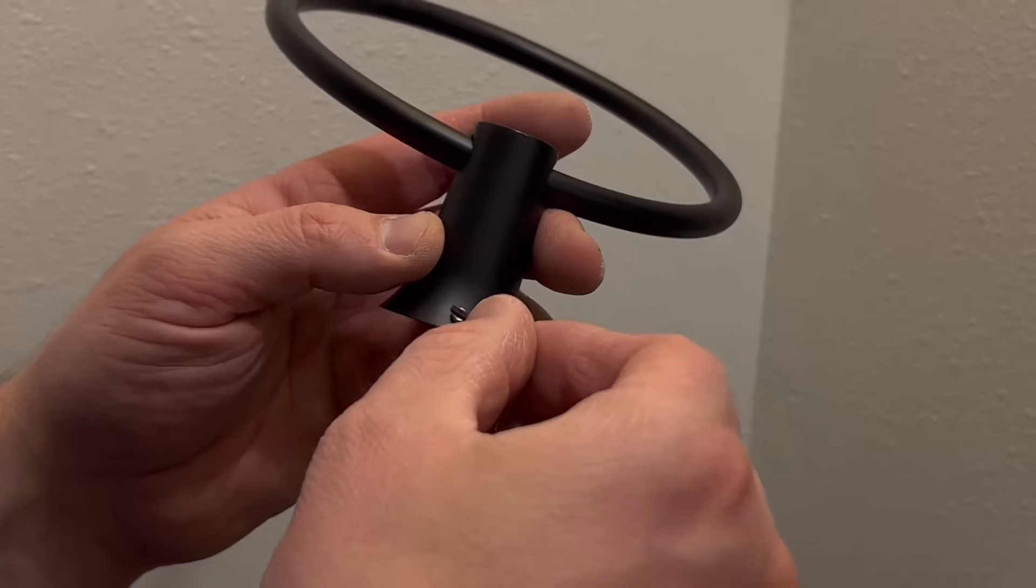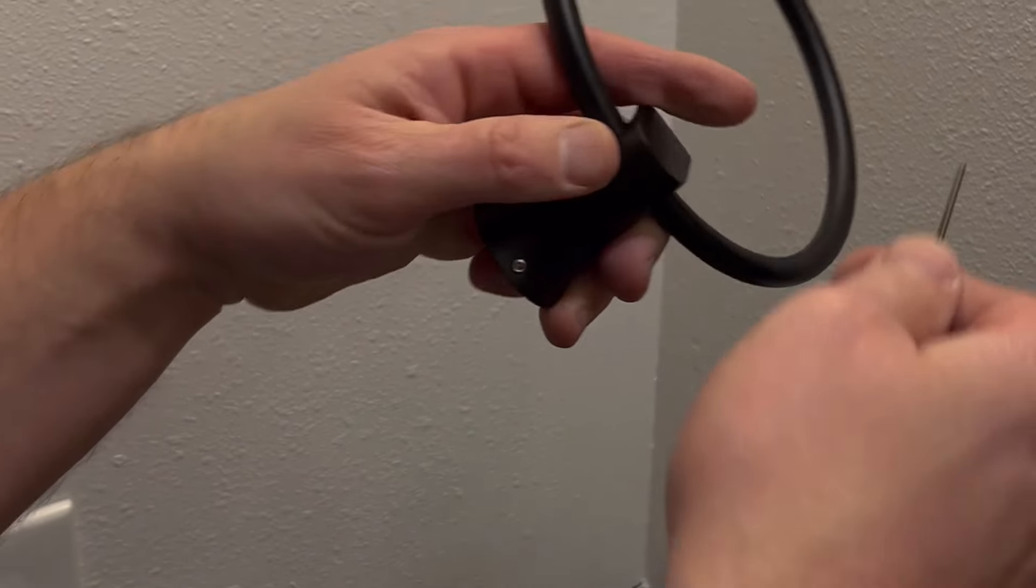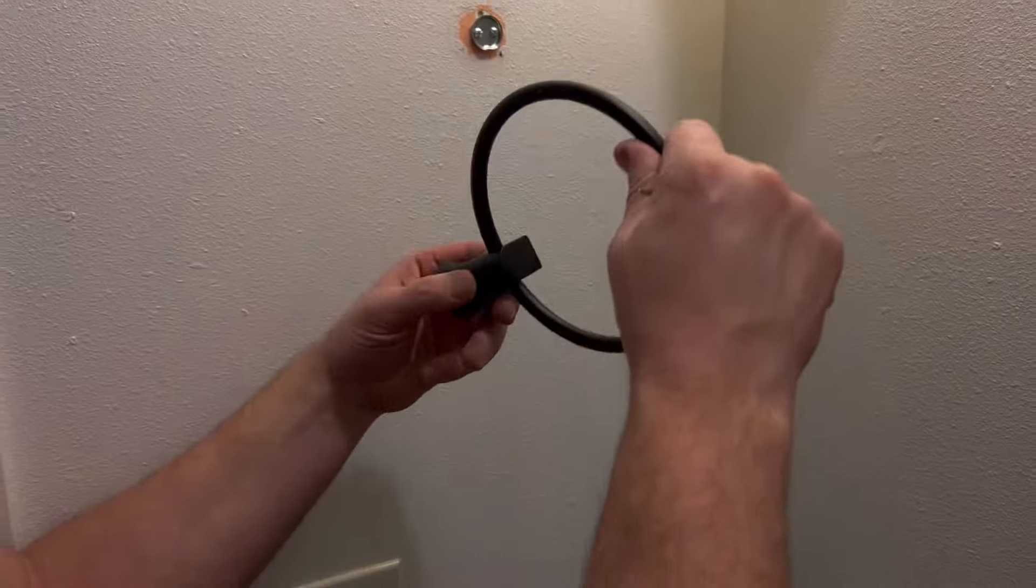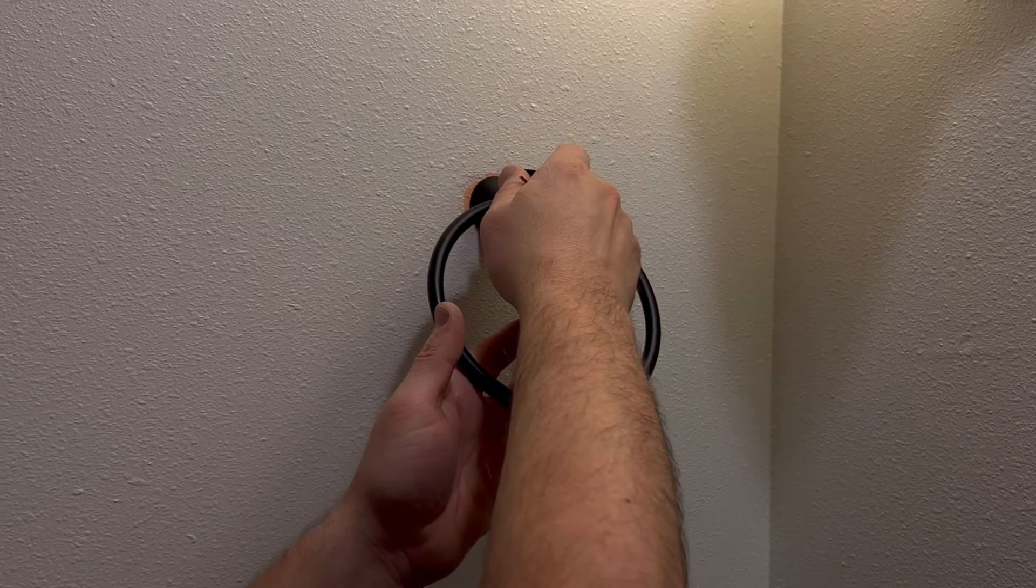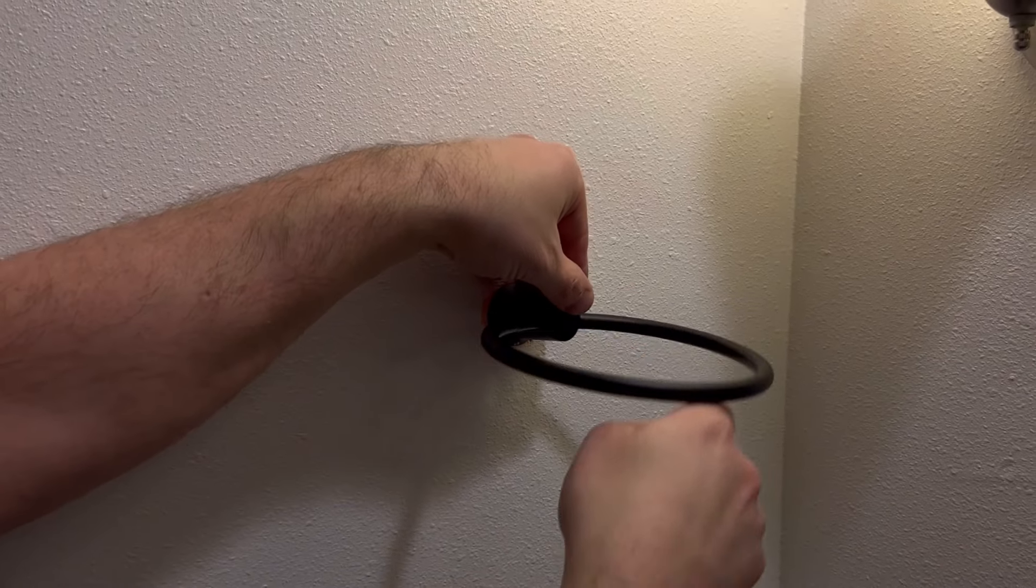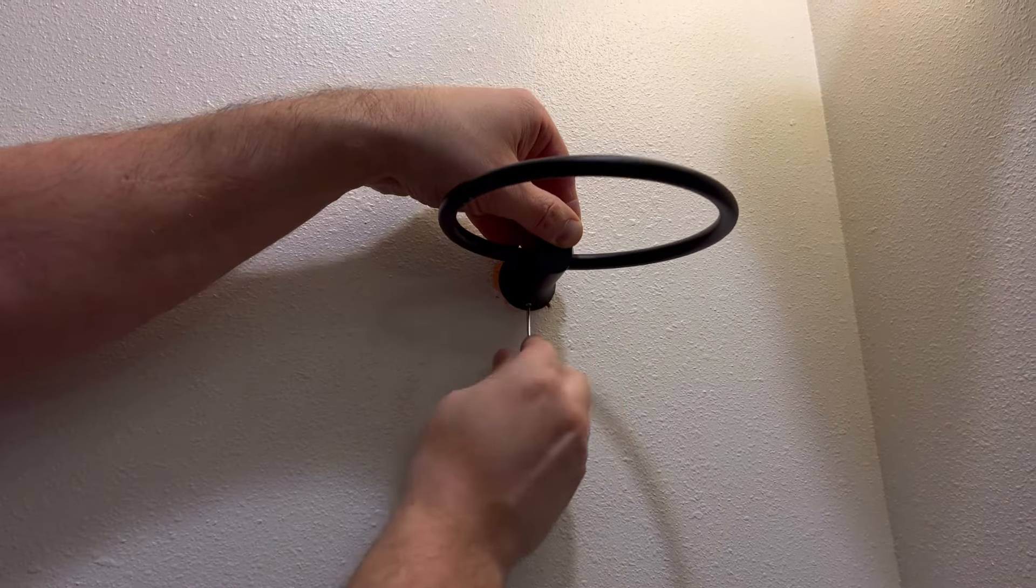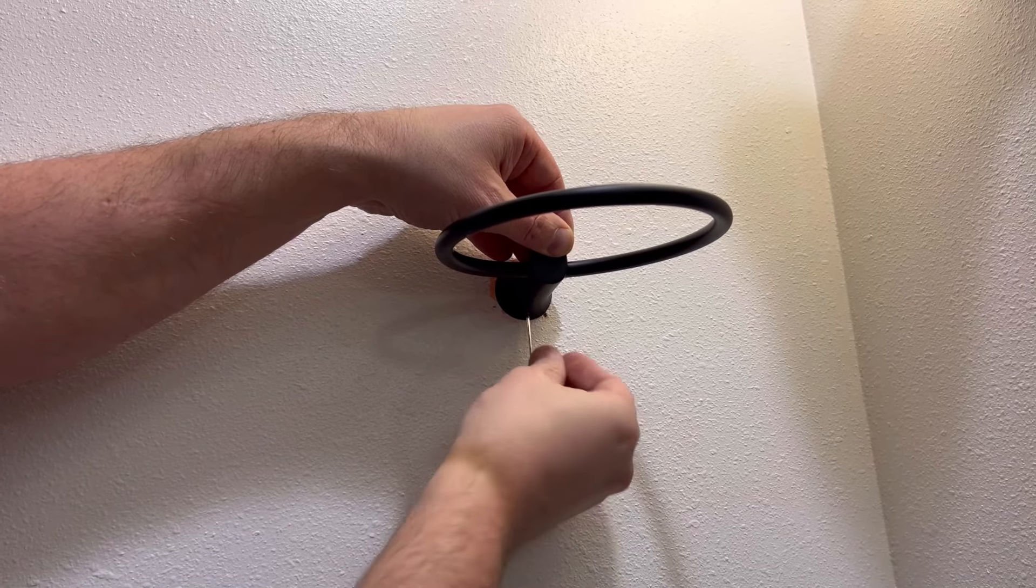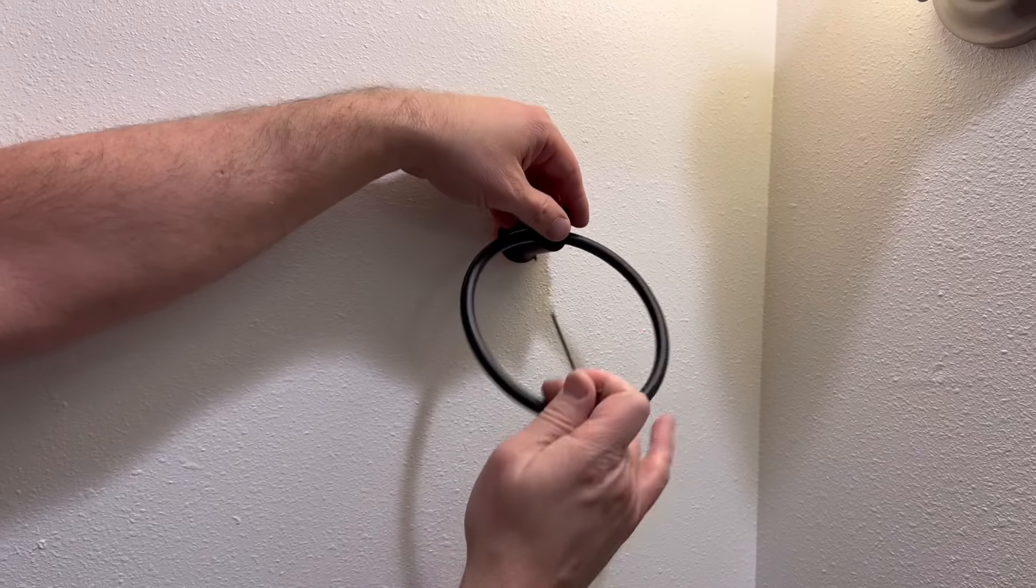Get it nice and snug. Just make sure this set screw's loose. And this is the bottom because it says screws up the bottom, just right at the top, and then just tighten it down. Just like that.